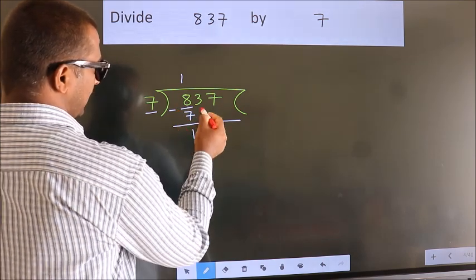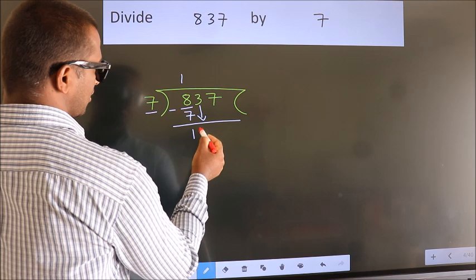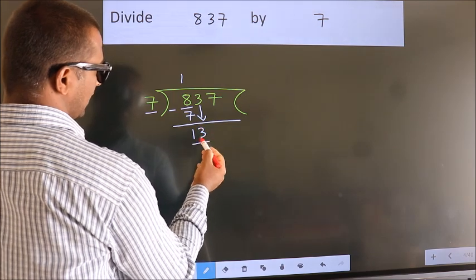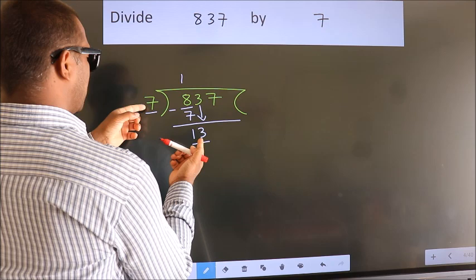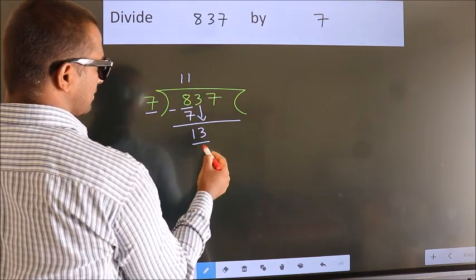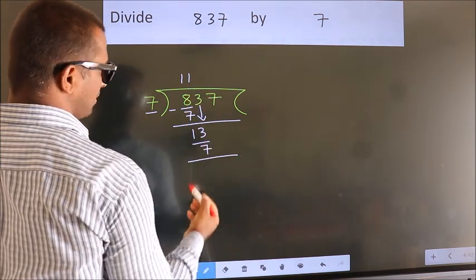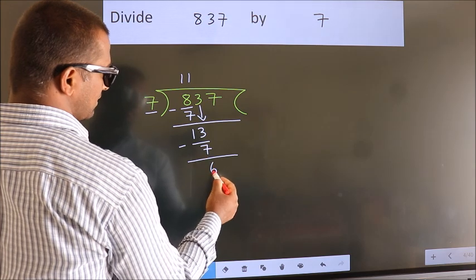After this, bring down the beside number, so 3 down, so 13. A number close to 13 in 7 table is 7 once 7. Now we subtract, we get 6.